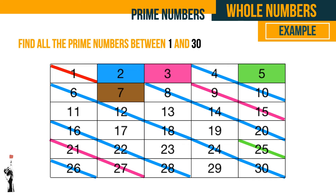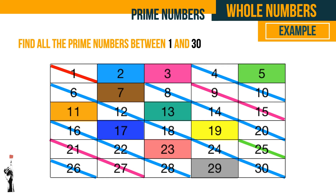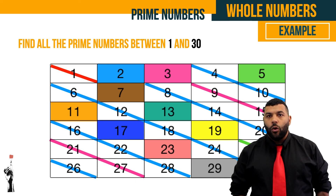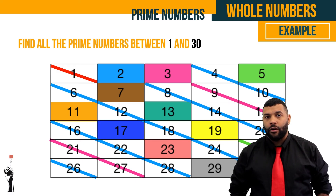All the other numbers we can check do not have any remaining multiples within the range. For example, eleven's next multiple is twenty-two which is already scratched out, and thirty-three is outside of thirty. The same applies to thirteen and others. The numbers that remain are only divisible by themselves and one — if you try to divide any of them by two you'll always get a remainder or a decimal. So we know the remaining numbers are prime numbers.